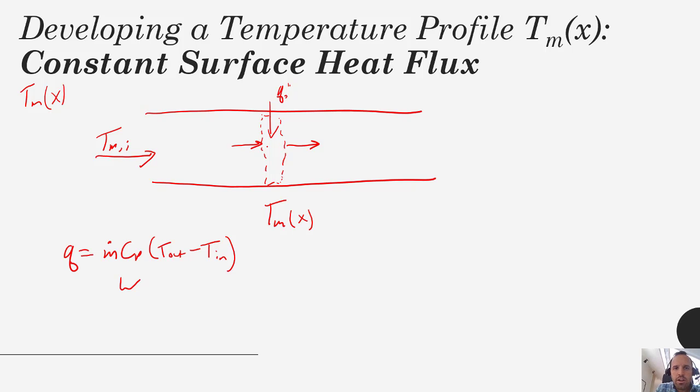Rather than saying q, we would call that dq. So the differential amount of heat that comes into that tiny element is going to be equal to m dot cp.